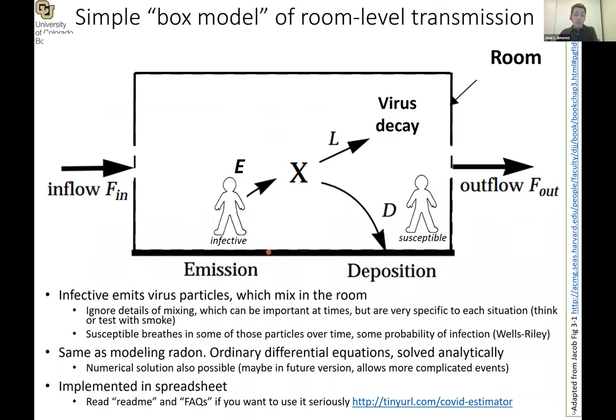The model is what we call a box model in atmospheric chemistry or indoor air. We basically do a conservation of viruses — conservation of mass — within a box. We assume we have an infective person exhaling virus-containing aerosols that fill the room relatively quickly. The viruses may lose infectivity over an hour or two, deposit to the ground slowly, or leave the room through ventilation as cleaner outdoor air replaces the virus-laden indoor air.